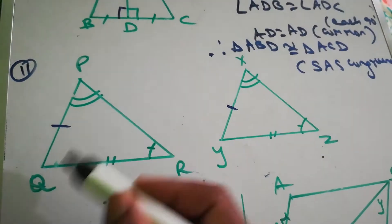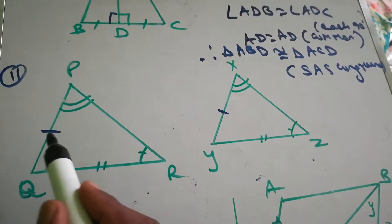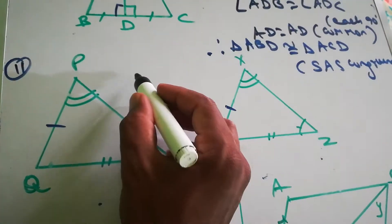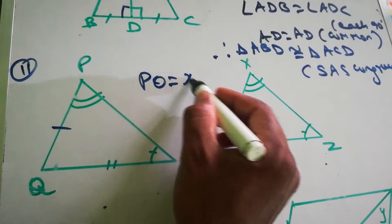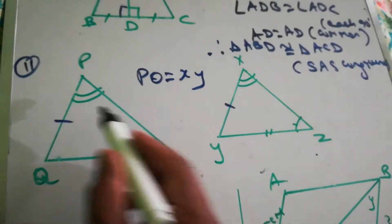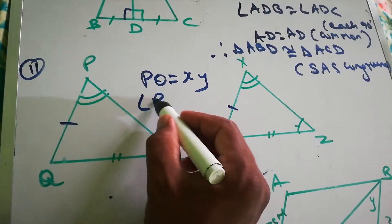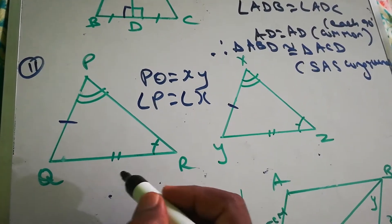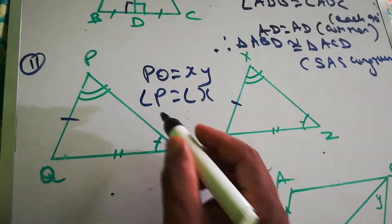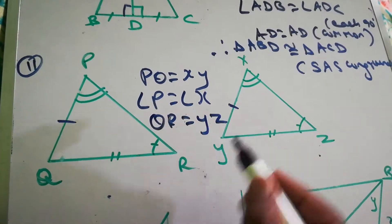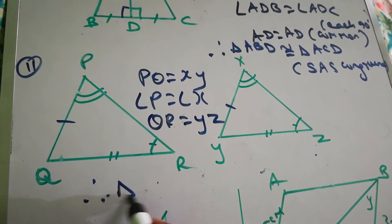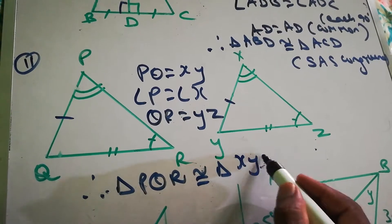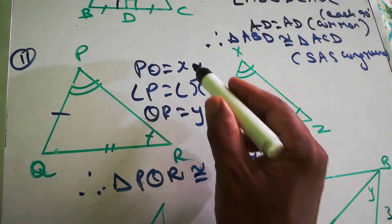Question number two: triangles PQR and XYZ are given. PQ equals XY, angle P equals angle X, and QR equals YZ. Therefore, triangle PQR is congruent to triangle XYZ by side-angle-side congruence.